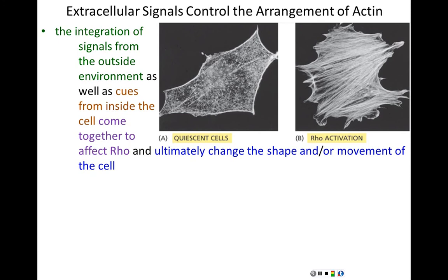Ultimately, the cell's shape and movement is affected by Rho activation, but Rho activation is the net result of a culmination of many, many different signals from outside and inside the cell. What is allowing these cells to integrate their signals and culminate at Rho? Crosstalk.